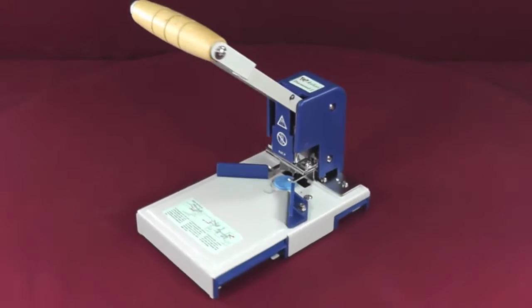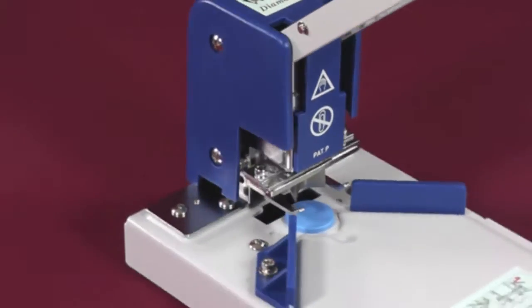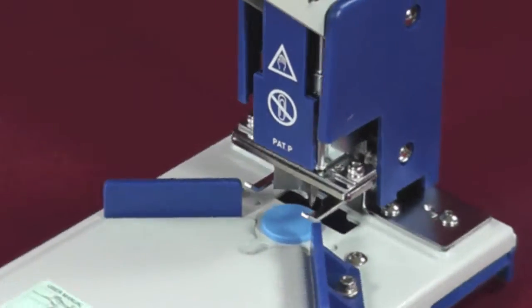For a reliable, easy-to-use solution to corner rounding, the Achilles Diamond 1 is the machine you need for perfectly rounded corners each and every time.